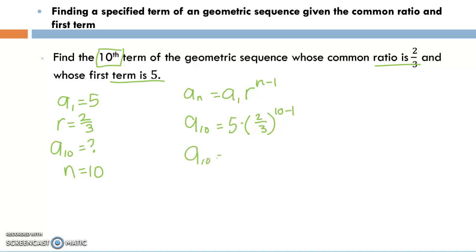When I'm doing these I have to remember this entire two-thirds is raised to the ninth power. So I have two to the ninth over three to the ninth, which two to the ninth is five hundred and twelve and three to the ninth is nineteen thousand six hundred and eighty three.